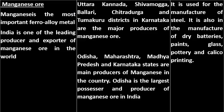Manganese is the most important ferro-alloy metal. India is one of the leading producers and exporters of manganese. In Karnataka, Uttara Kannada, Shivamogga, Ballari, Chitradurga and Tumkur districts have manganese reserves. Manganese is used for the manufacture of steel and also in the production of dry batteries, paints, glass, pottery and calico printing. Odisha is the largest producer of manganese.